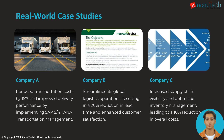Here are some real-world examples. Company A reduced costs 15% and improved delivery by implementing transportation management. Company B streamlined global logistics, reducing lead times 20% and improving customer satisfaction. Company C increased visibility, optimizing inventory, and reducing costs 10%.